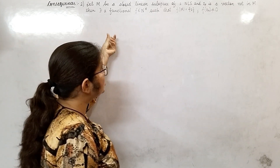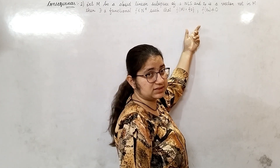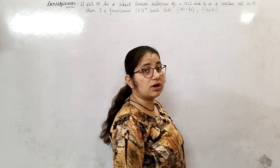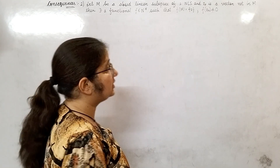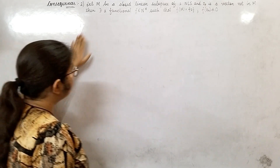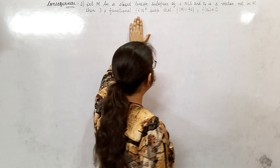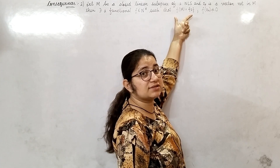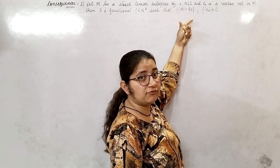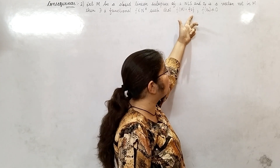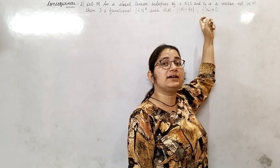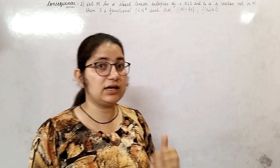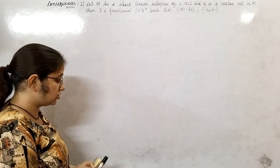The statement says: M is a closed linear subspace of a normed linear space N. And x₀ is a vector which is not in M. Then there will be a functional F belonging to N* such that this closed linear subspace M will always map to 0, and F of x₀ will be non-zero. That is what we need to show.